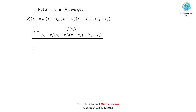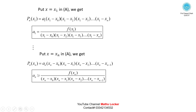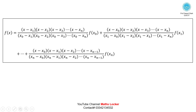Similarly, continuing this process for x = x2, x3, ..., xn, we get A2, A3, and finally An = f(xn) / [(xn-x0)(xn-x1)(xn-x2)...(xn-xn-1)]. Substituting all values A0, A1, ..., An back into equation A gives the Lagrange Interpolation Formula: f(x) = [(x-x1)(x-x2)...(x-xn) / (x0-x1)(x0-x2)...(x0-xn)] * f(x0) + similar terms for each node.